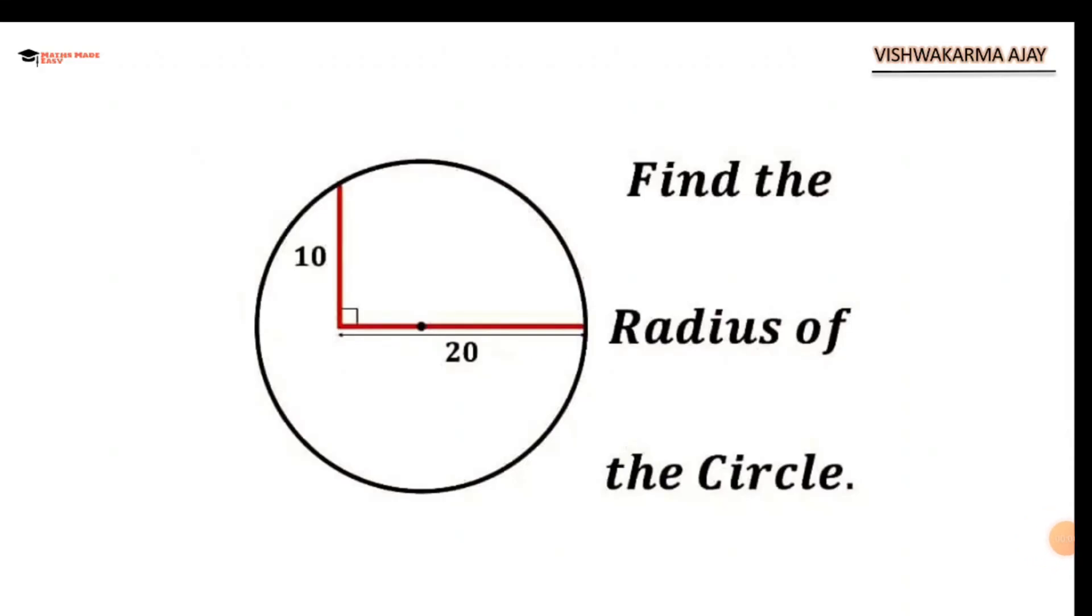Hello and welcome back to Maths Made Easy. Today we are going to solve a question from geometry featuring Pythagoras theorem and binomial theorem of order 2, that is (a + b)² or (a - b)².